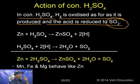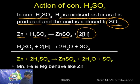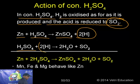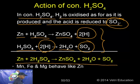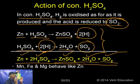Metals below hydrogen in the electrochemical series — like copper, silver, and mercury — behave differently with dilute sulphuric acid. In presence of air they form sulphates and water but no hydrogen: 2Cu + 2H₂SO₄ + O₂ → 2CuSO₄ + 2H₂O. So metals above hydrogen in the electrochemical series do not produce hydrogen even with dilute sulphuric acid.